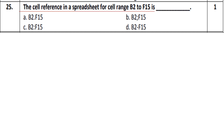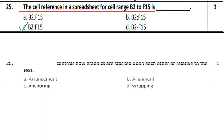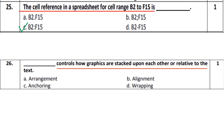Question number 25: the cell reference in a spreadsheet for a cell range — if you select a particular cell range from B2 to B15, which type of cell will be referred to? Option number C is correct.